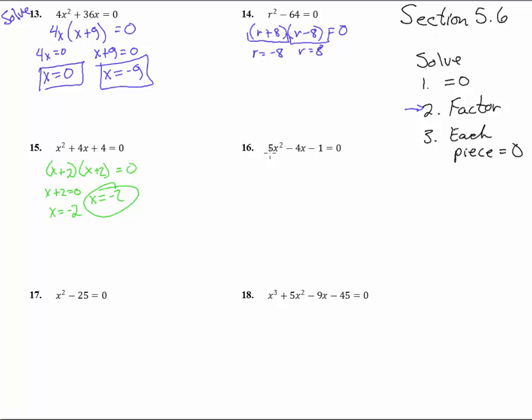Number 16, 5x squared minus 4x minus 1. In order to factor this, we're going to need to use the AC method. 5 times negative 1 is negative 5. 1 and 5, looks like negative 5 and positive 1 is what will work. So we get 5x squared plus x minus 5x minus 1 equals zero.